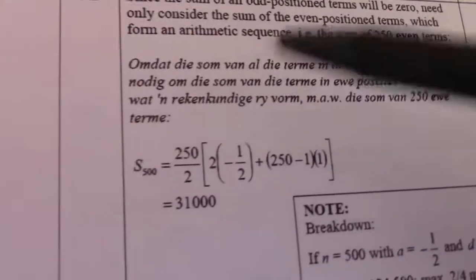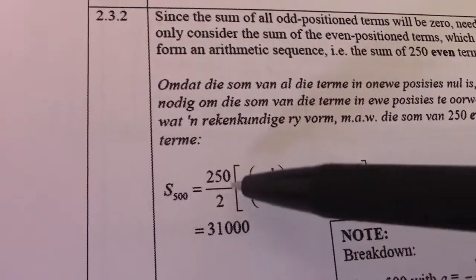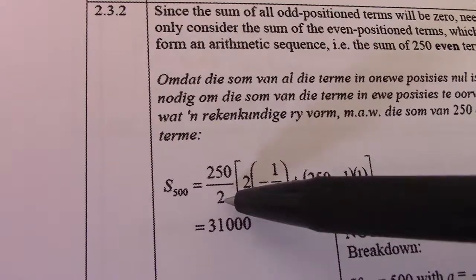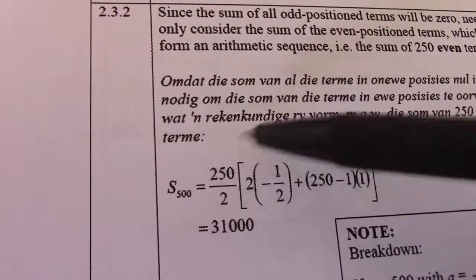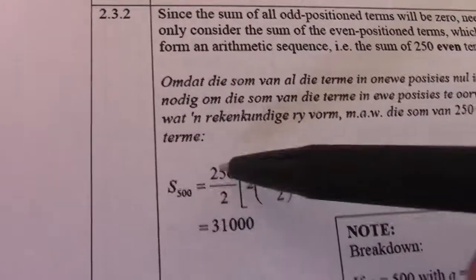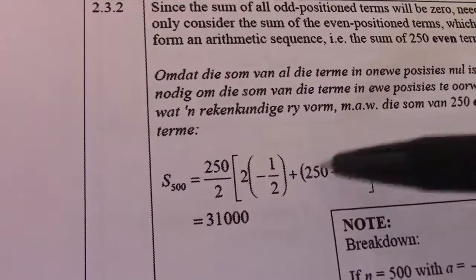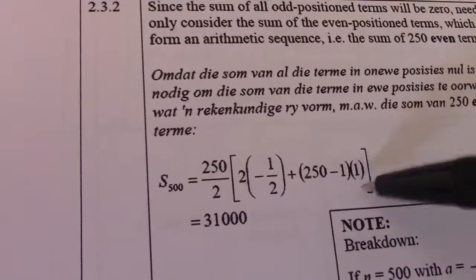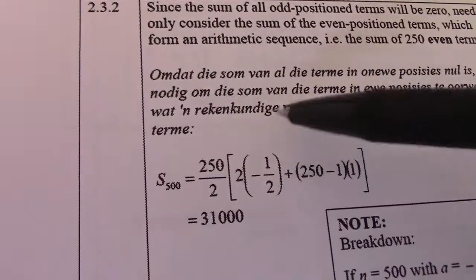All right, so I can say the sum to 500 terms equals 250 divided by 2, because the other 250 is 0. It's n over 2 times 2 times a, which is minus 1, plus n minus 1 times d. And as I said, 250 of them are 0.